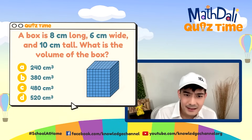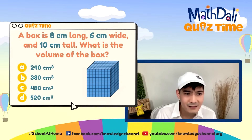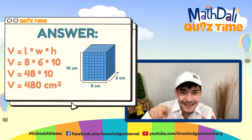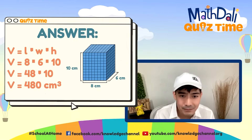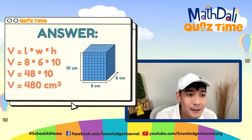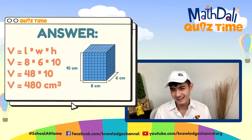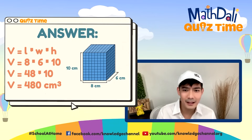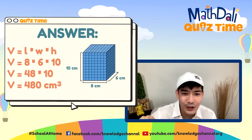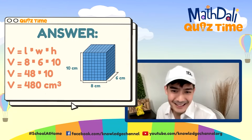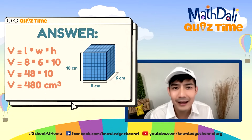Let's answer the question right now. A box is 8 centimeters long, 6 centimeters wide, 10 centimeters tall. Ano ang volume ng box natin? Let's multiply: 8 times 6... wait — 8 times 6 is not 24. It is 48. So 48 times 10 — add another zero — will give us 480. C is the correct answer. It's 480 cubic centimeters.